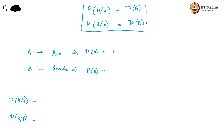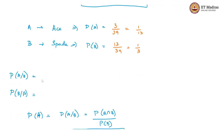All the hearts are removed, which means the probability of an ace coming up will have 3 aces remaining, but there are only 39 cards left, so this is equal to 1 by 13 again. And the probability of spades: there are now 13 spades out of 39, so that gives us 1 by 3 as P of B. Then P of A given B — given that it is a spade, how many are aces? That would again be 1 by 13, which is equal to P of A.